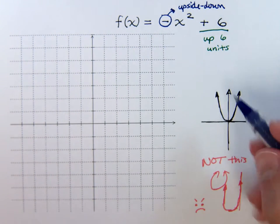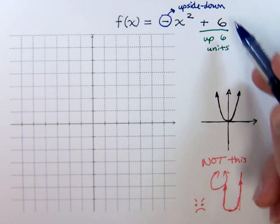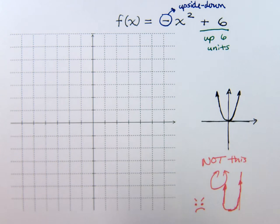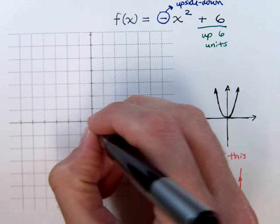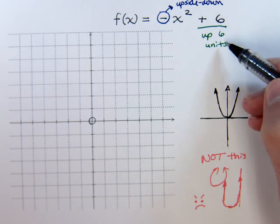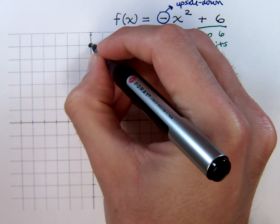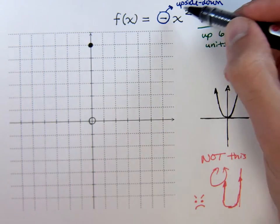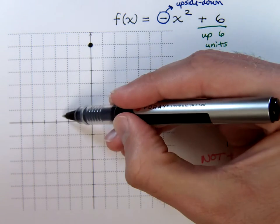We're going to take our basic parabolic shape here, it's going to go up 6 units, and then we're going to turn it upside down. So our vertex would normally be right here at the origin, but according to what I've done here, I'm going to take this and move it up 6 units to be right here. I'm also going to be opening upside down, so I know my graph is going to be looking something kind of like this.